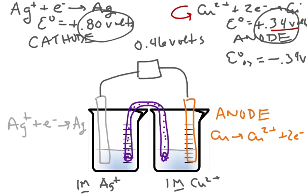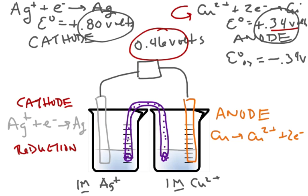This is a cathode and this is reduction. With this complete circuit, we would expect to see 0.46 volts. Here's our anode and this is oxidation.